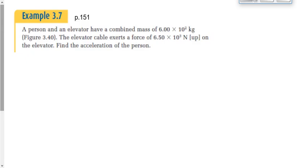Let's do another example. Page 151. This one says, a person and an elevator have a combined mass of 600 kilograms. The elevator cable exerts a force of 6,500 newtons up. On the elevator, find the acceleration of the person. Let's work through this together by drawing a picture. Here's the elevator. Here's the person in the elevator. The free body diagram technically shows only forces, but if it's convenient to put mass in there, it's certainly okay to do that. It is 600. You're right.